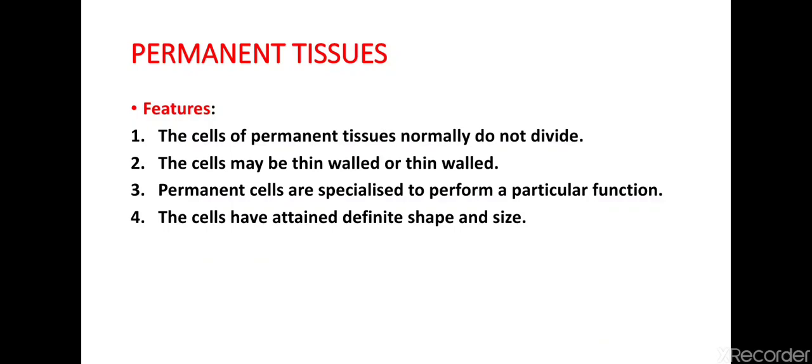Permanent tissues are those tissues which have lost the ability to divide and have attained a definite form and size. These permanent tissues are derived from the meristematic cells. The basic features of permanent tissues are: the cells normally do not divide, because they have lost the ability to divide.